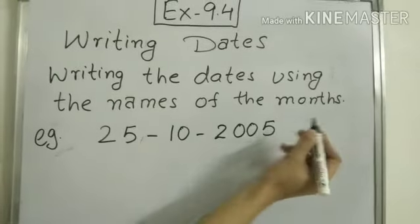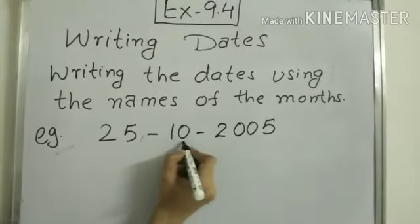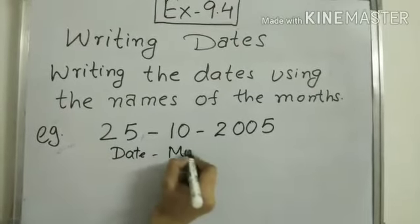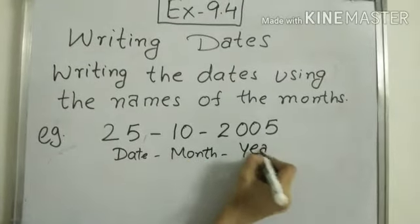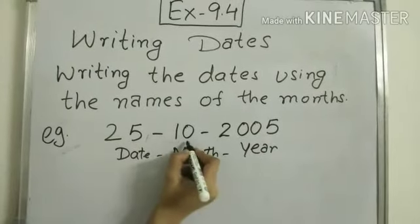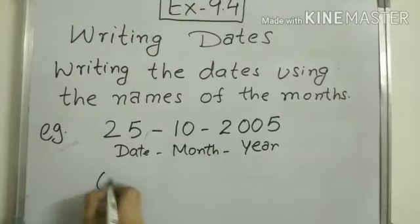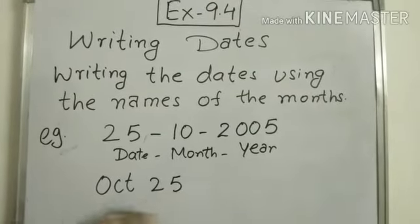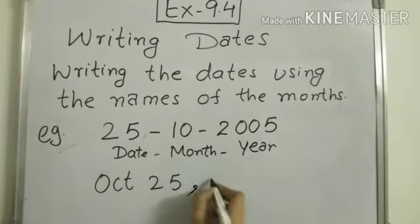and this is year. And we will write first month, 10th month is October, so we will write October 25, now we will put comma, 2005.